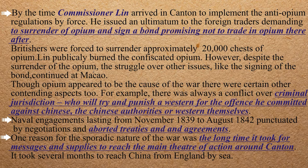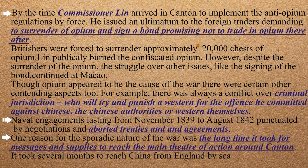Opium was a chief cause of this war, but there were many other aspects. For example, there was the question of legal jurisdiction — if a crime was committed in China involving a westerner, who would have authority over the case? This was a major source of conflict.